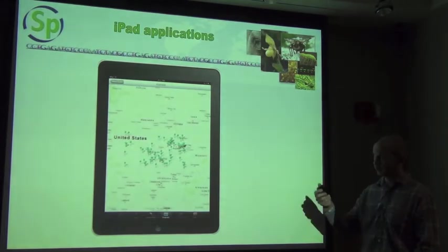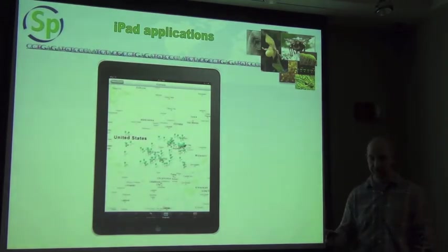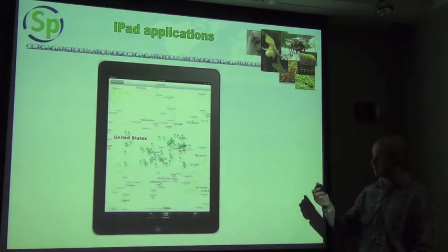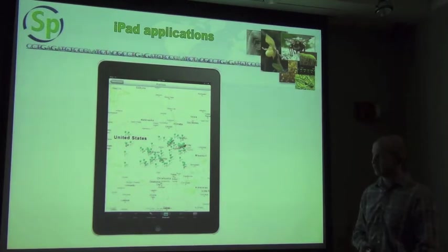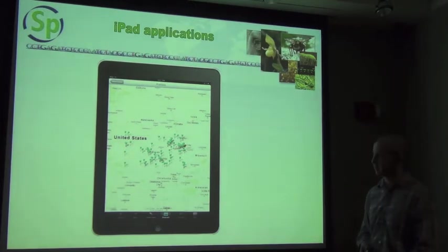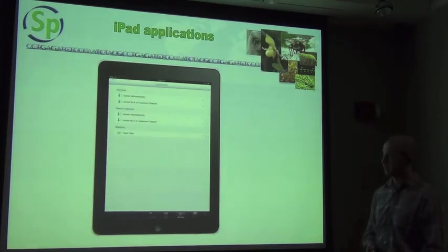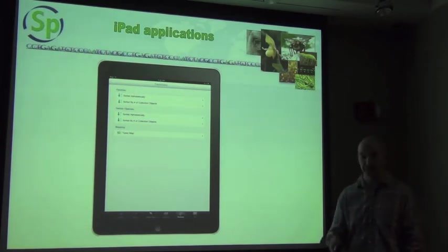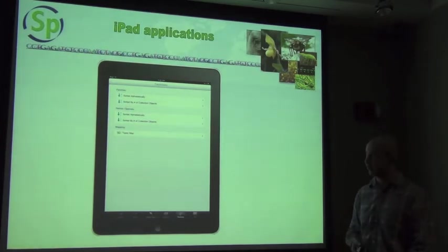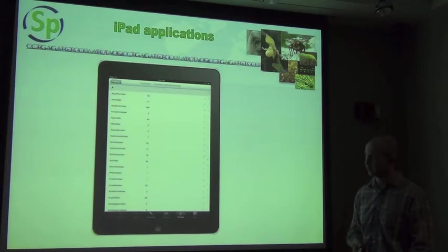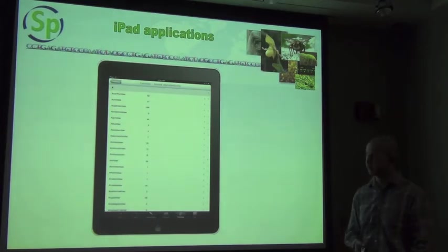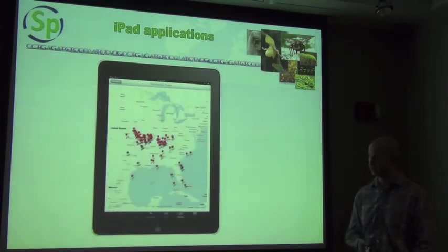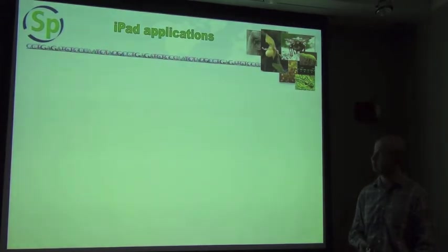You'd also be able to do mapping of multiple specimens and see the distribution of different species at the same time. You'd be able to search by taxonomy or geography to get an idea of what was found in a particular area, or what you have in your collection from a particular taxonomy.